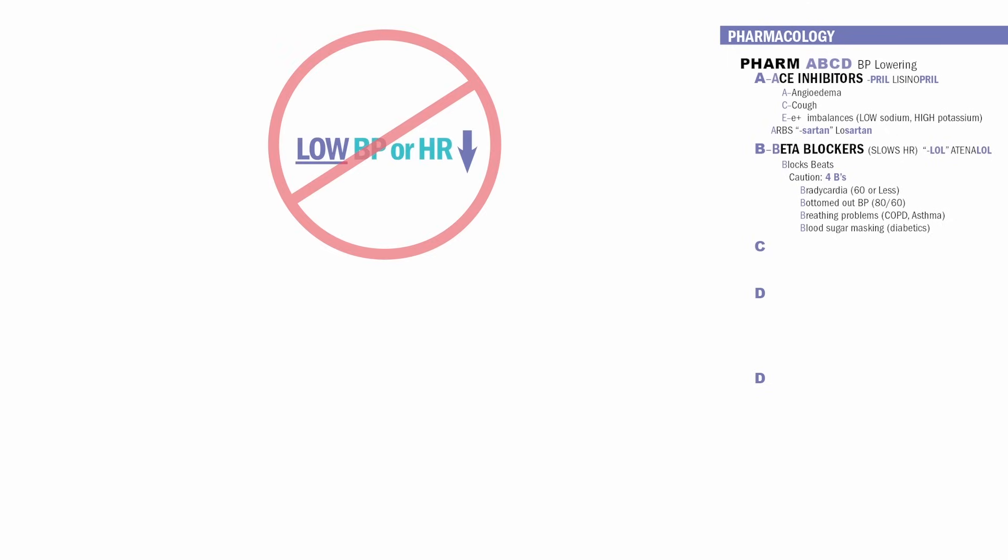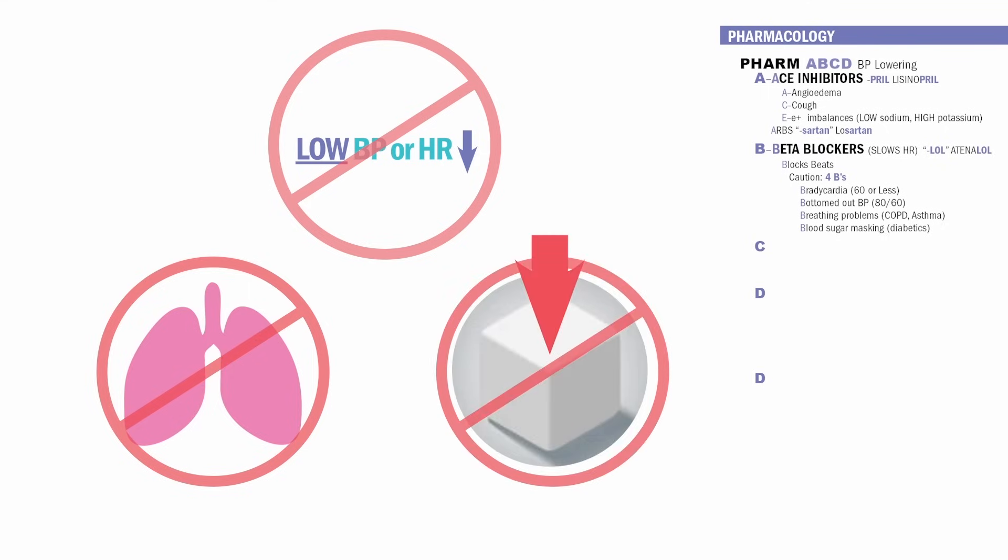Bradycardia. Anything below 60 heart rate or less, we cannot give this medication. B for bottoms out the blood pressure. Anyone with hypotension, we have to hold this medication. Beta blockers also constrict the bronchi. So any type of breathing problems, even a history of COPD or asthma, you can't give the drug. And lastly, blood sugar masking for hypoglycemic, low blood sugar patients. Big caution for diabetics. Always monitor their sugar closely.